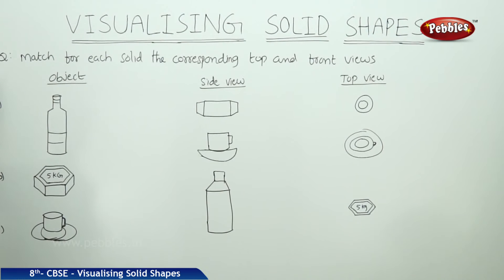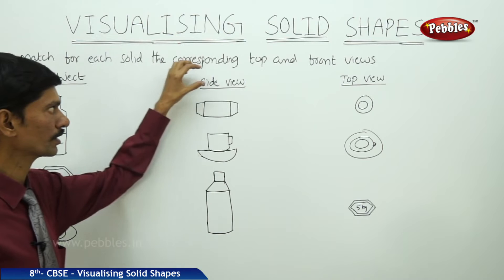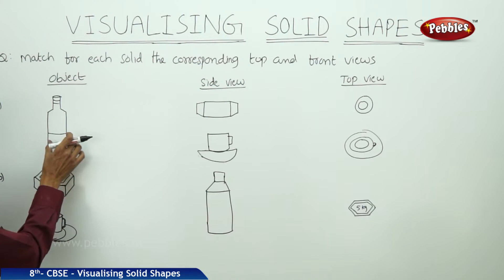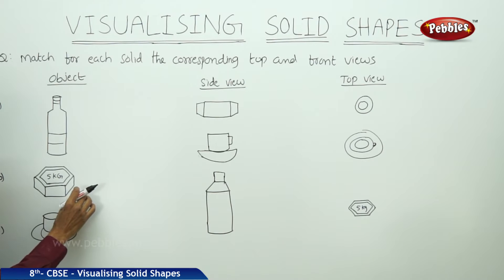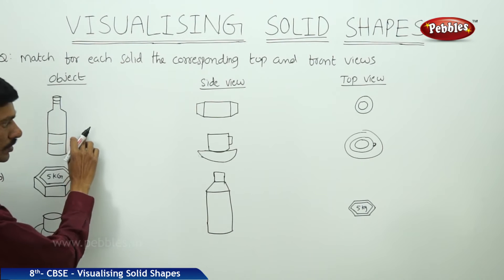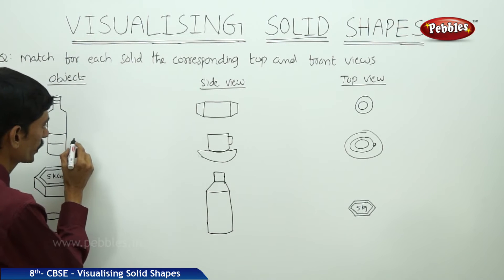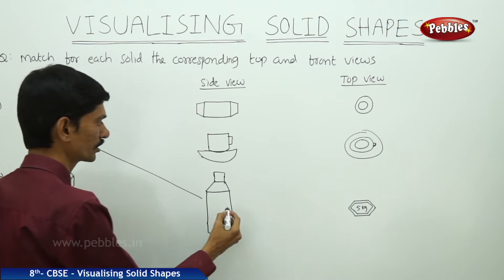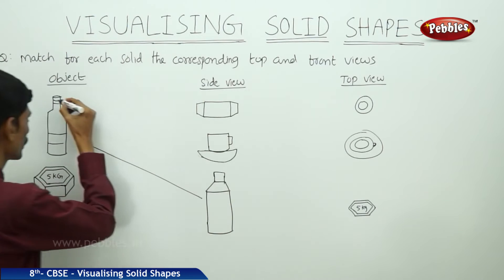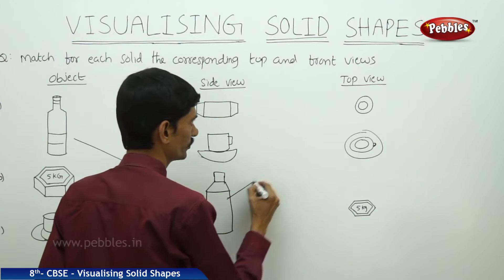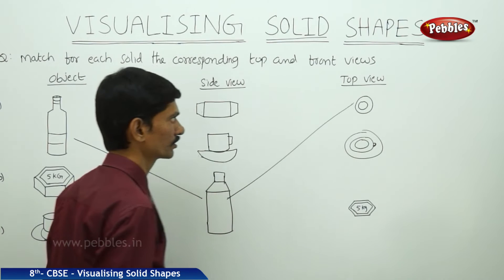Now let us see the question: match for each solid the corresponding top and front views. There are three objects: a water bottle, a weighing stone of five kilograms, and a cup and saucer. If you see the side view of the bottle, it appears like a cylindrical shape. From the top, we can see two concentric circles, so we match that to the top view.